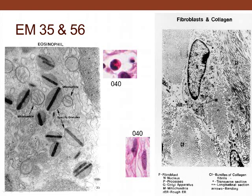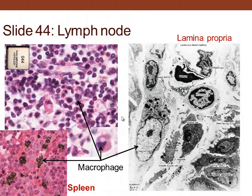Here is a fibroblast with various organelles including rough ER. What it produces is extracellular matrix — the collagen bundles. We can see cross-sections of individual collagen fibrils and a longitudinal section of the collagen bundles.